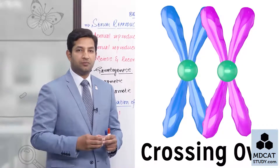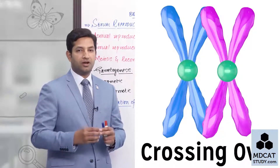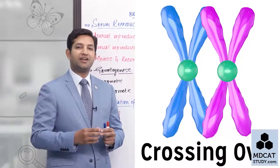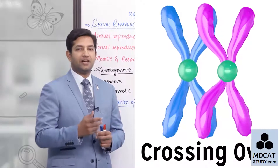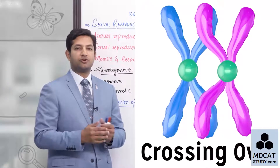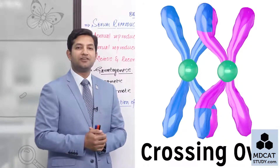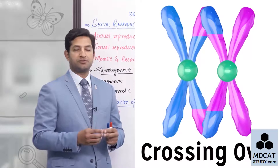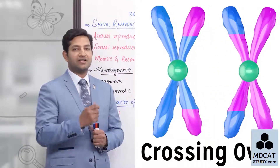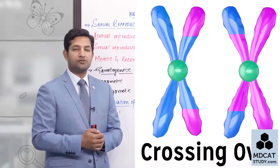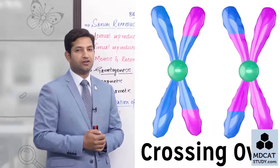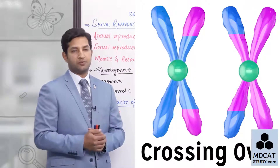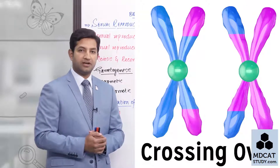During the process of gamete formation — gametogenesis — the meiosis that takes place results in every homologous chromosome switching their genes between themselves. This is crossing over, also known as genetic recombination. Because of this, different products are produced.